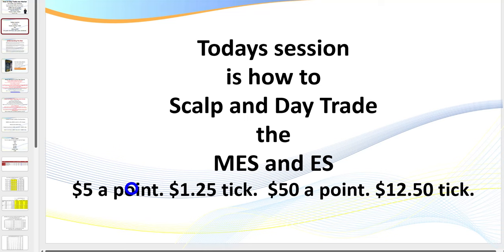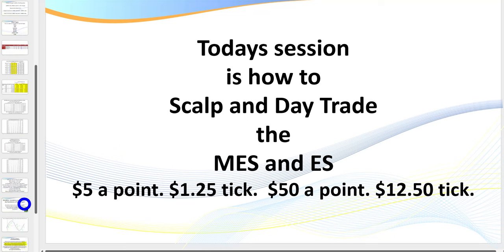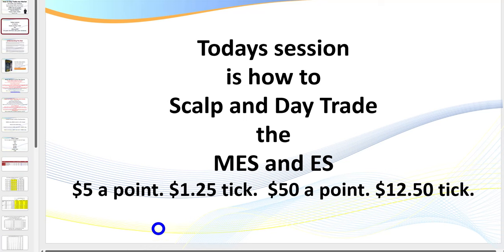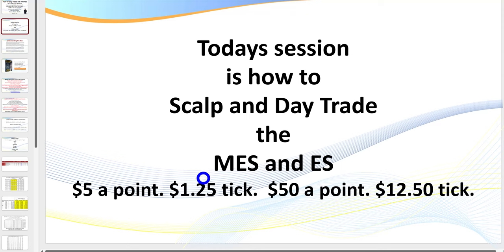If you're not familiar with the ES or the micro ES: the micro ES is 10% of the value of the big contract. The MES is $5 a point with four ticks to a point, so $1.25 per tick — a great spot to start your career with good volume, even with a small account. Then you graduate to the ES, which is $50 a point or $12.50 a tick.